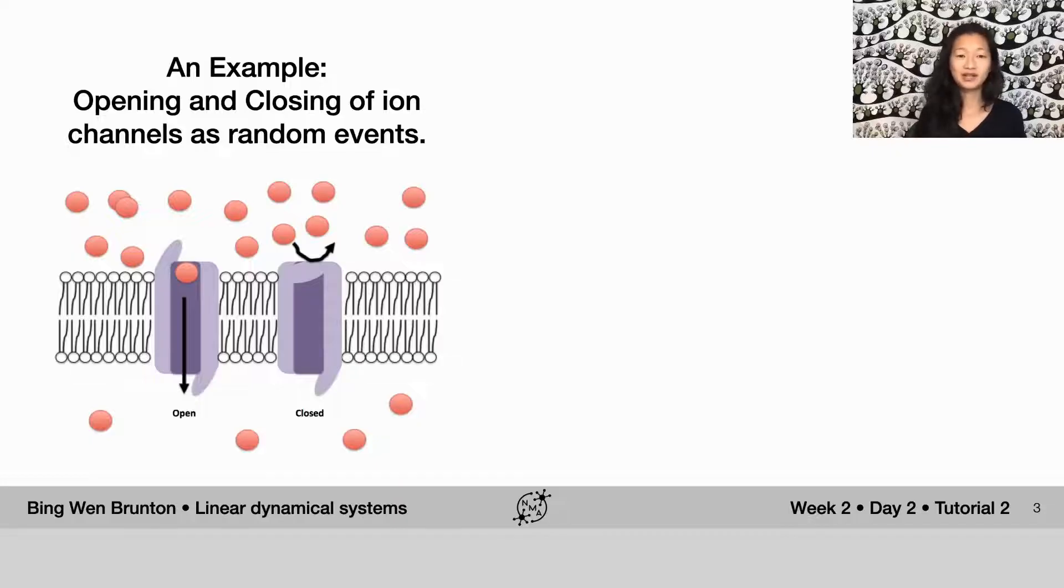These are ion channels that are embedded in the cytoplasm of the cell. And depending on which ones, how many of them are closed or open, ions like sodium, chlorine, and potassium will flow in and out of the cell, and that changes the electrical potential of the cell and is the basis of an action potential.